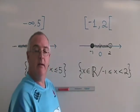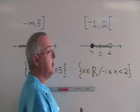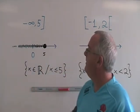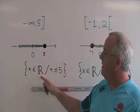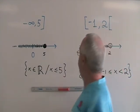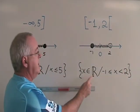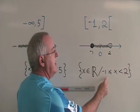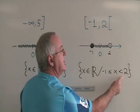This is how we translate from interval notation into set builder notation. x is an element of real numbers such that x is less than or equal to 5. x is an element of real numbers such that negative 1 is less than or equal to x, which is less than 2.